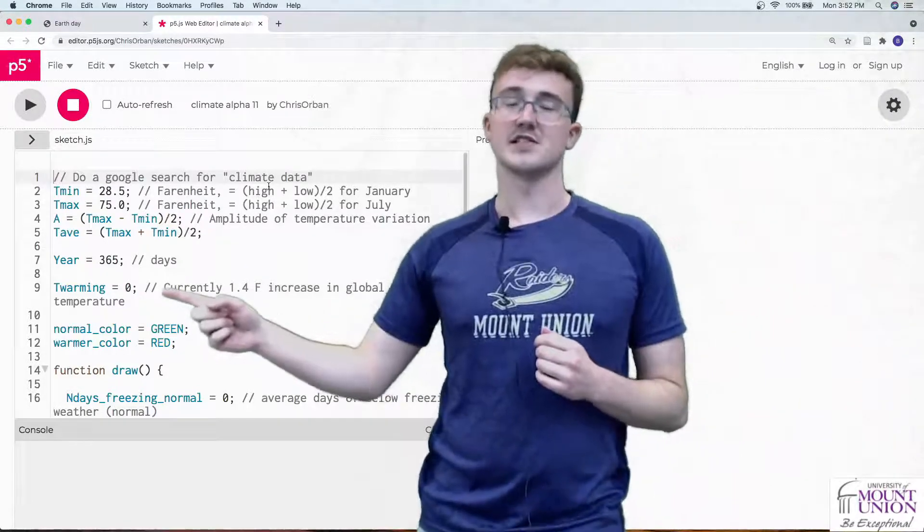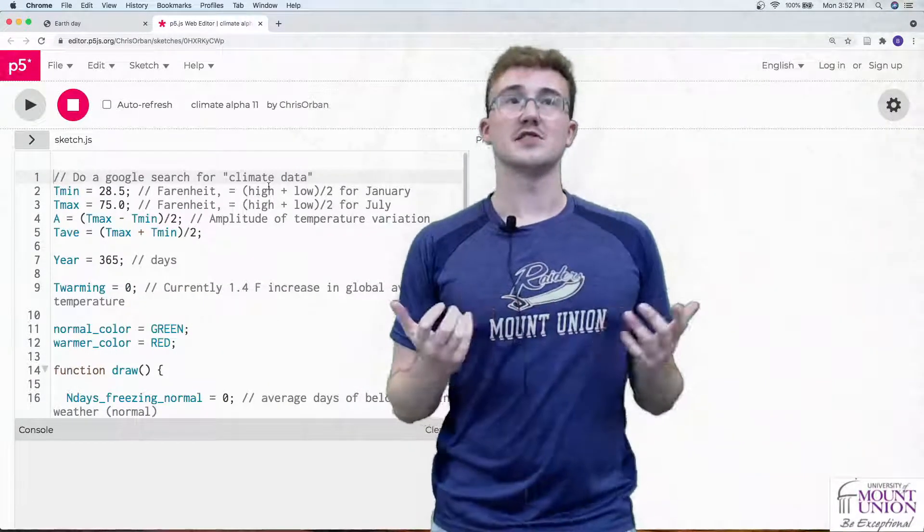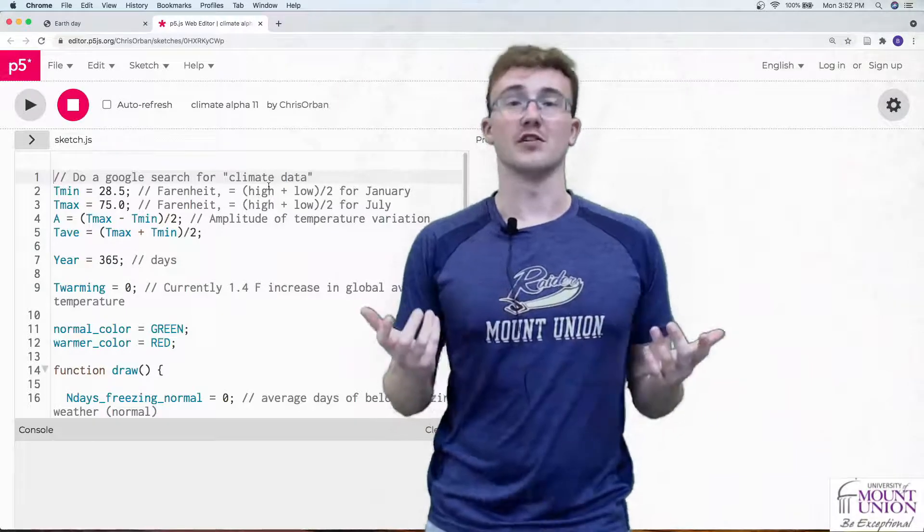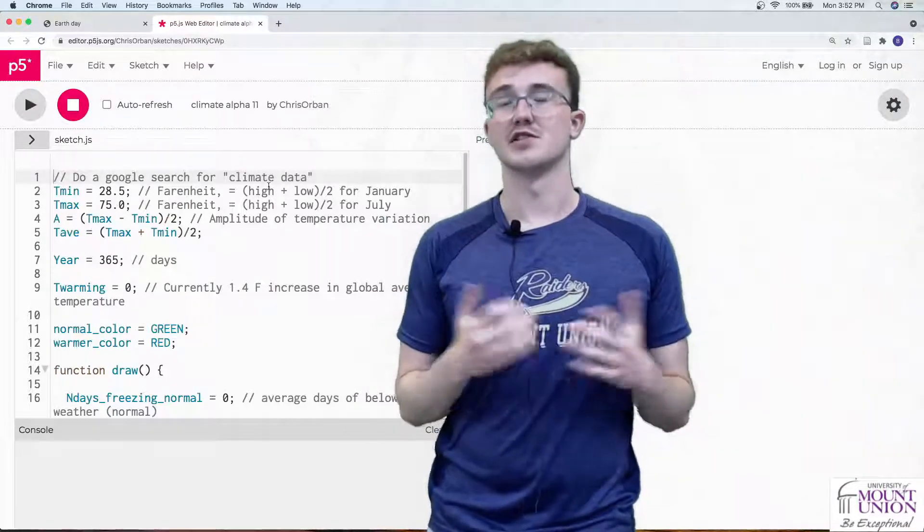T_warming is set to zero initially. This tells us how much global warming we're modeling, so we set it to zero as a baseline. We'll increase T_warming over time to simulate global warming.